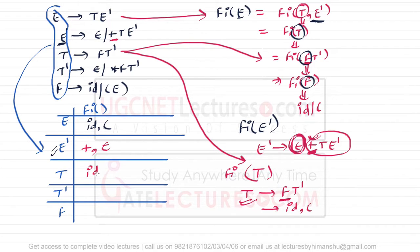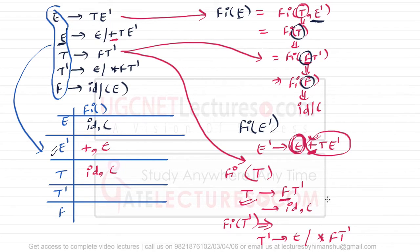Now we find FIRST(T'). The production is T' → epsilon | *FT'. Here '*' is a terminal and epsilon is also a production, so FIRST(T') = {*, epsilon}. And we already know FIRST(F) = {id, (}.